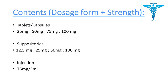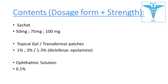Dosage forms include capsules and tablets: 75 mg, 100 mg, 50 mg, 25 mg. Suppositories: 12.5 mg, 25 mg, 50 mg, 100 mg. Injection: 75 mg/3 ml. Also available as sachets, topical gel, and transdermal patches. The transdermal patch of Diclofenac contains 1.3% Diclofenac Epolamine.